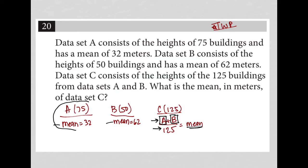For instance, if I said A represents the sum of all 75 heights from those 75 buildings, then that would mean that A divided by 75 equals 32. That's how you would find the mean, which would also mean that multiplying both sides by 75 would help me to figure out what A actually equals. And again, A in this case is the sum of all 75 building heights. So go to my calculator. 75 times 32 is 2,400. So now I know A equals 2,400.